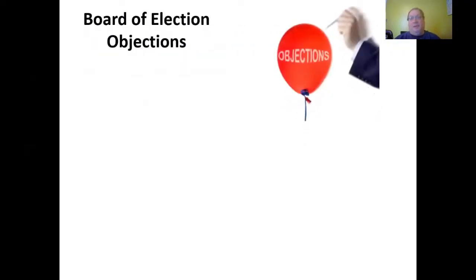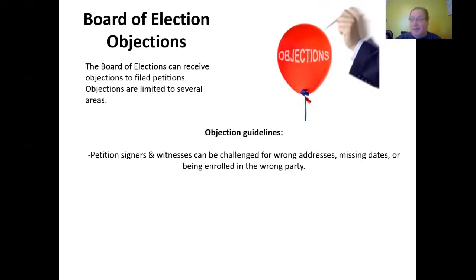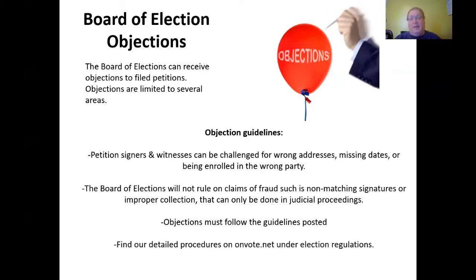The Board of Elections can receive objections to filed petitions. Objections are limited to several areas: petition signers and witnesses can be challenged for wrong addresses, missing dates, or being enrolled in the wrong party. The Board of Elections will not rule on claims of fraud, such as non-matching signatures or improper collection — that can only be done in judicial proceedings. Objections must follow the guidelines posted. Find our detailed procedures on onvote.net under election regulations, and you can find the New York State Board of Elections ones on their website as well.